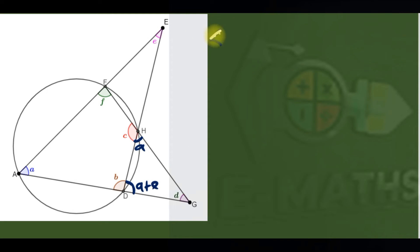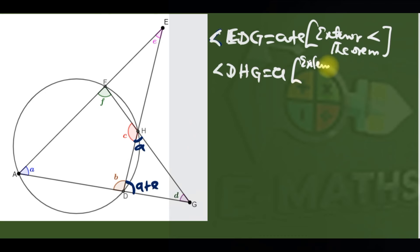I'm saying that angle EDG is a plus e by exterior angle theorem. And angle DHG is a, which is exterior angle of a cyclic quadrilateral.